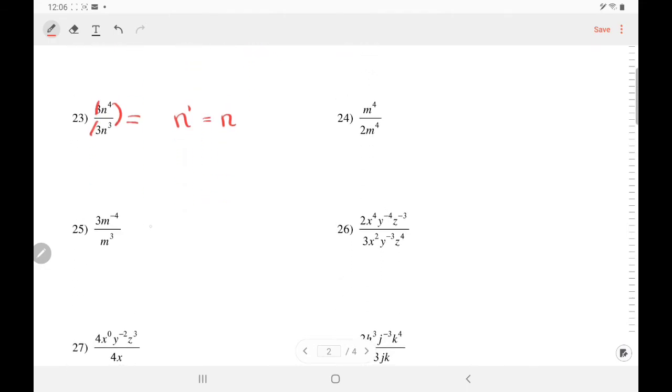In number 25, the 3 is going to stay where it is. In division, we subtract exponent. So M negative 4 minus 3 is negative 7. M has a negative exponent, but not 3.